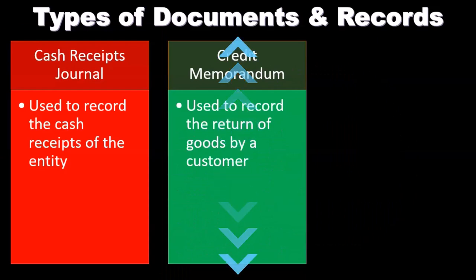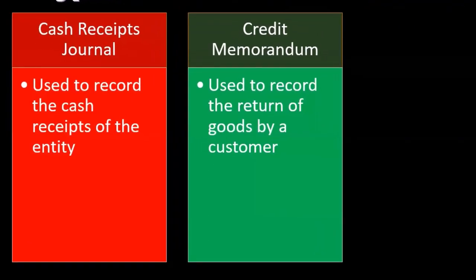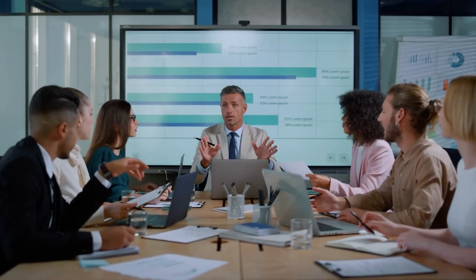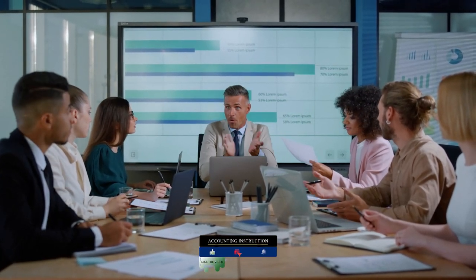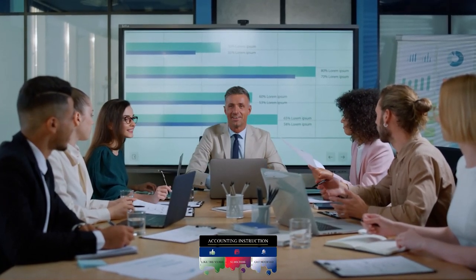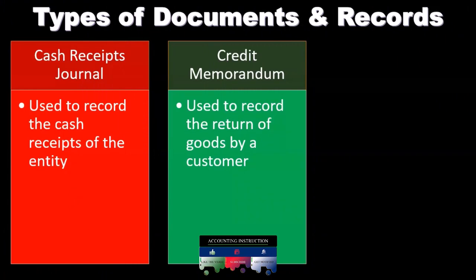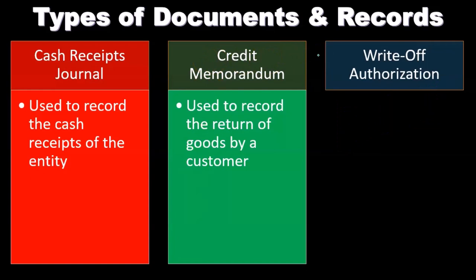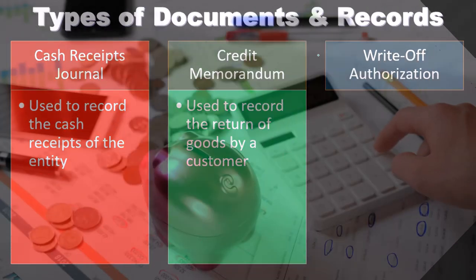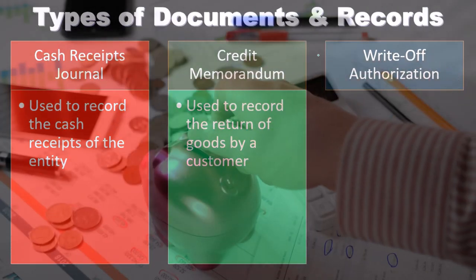The credit memorandum is used to record the return of goods by customers and is important for the recording of revenue. The credit memorandum essentially reverses the original sale — instead of recording a sale, you record a sales return and allowance. This can be a bit confusing because it's the backwards of the normal sales transaction, but understanding the credit memorandum is essential when analyzing returns.